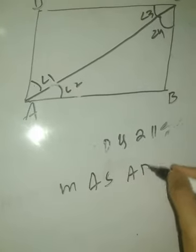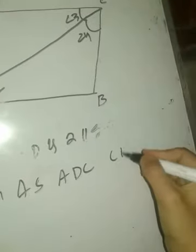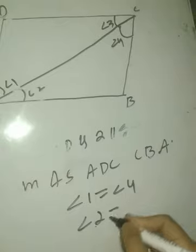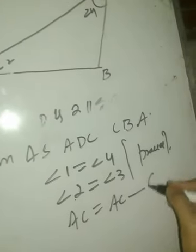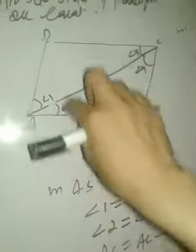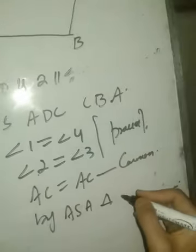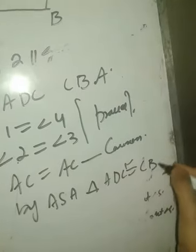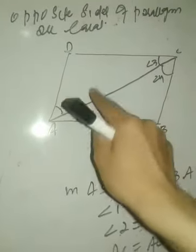In triangles ADC and CBA: angle 1 equals angle 4, angle 2 equals angle 3 (both proved), and AC equals AC (common side). So by ASA, triangle ADC is congruent to triangle CBA. This is angle 1, angle 2, and the included side AC — satisfying the ASA criterion.